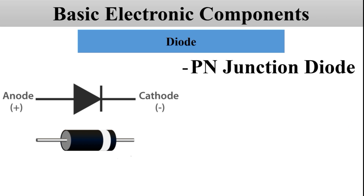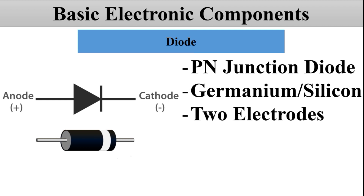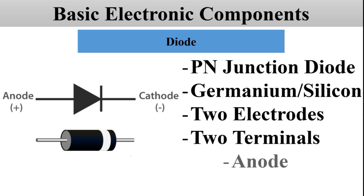A p-n junction diode consists of a p-n junction formed from either germanium or silicon crystals. It has two electrodes — p-type and n-type. The p-region of the diode is called the anode and the n-region is called the cathode, indicated by terminals A and K respectively. The symbol looks like an arrow pointing from the p-region to the n-region, i.e., from the positive to the negative electrode. The arrow head in the circuit symbol points in the direction of conventional current flow when it is in forward bias.